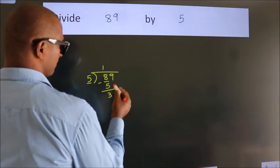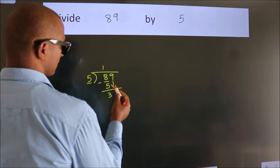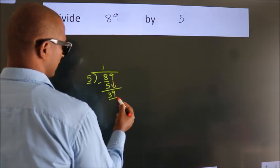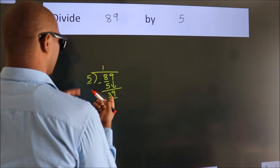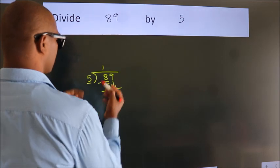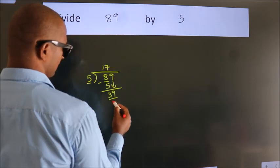After this, bring down the beside number. So 9 down. So 39. A number close to 39 in 5 table is 5 sevens 35.